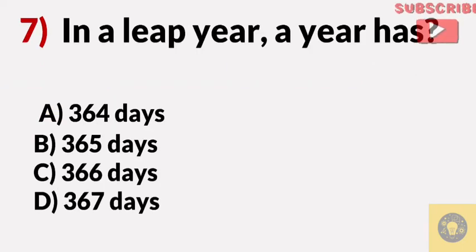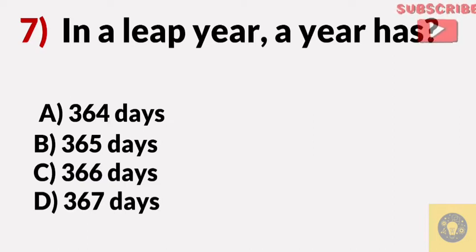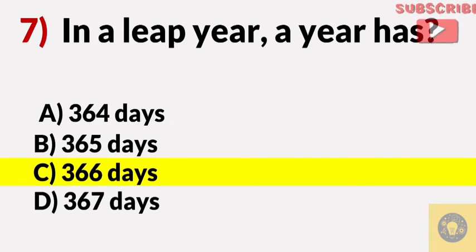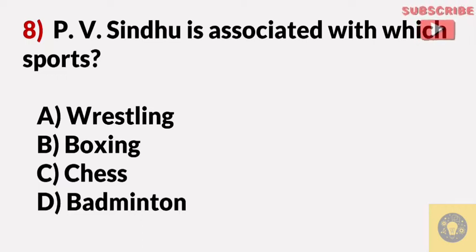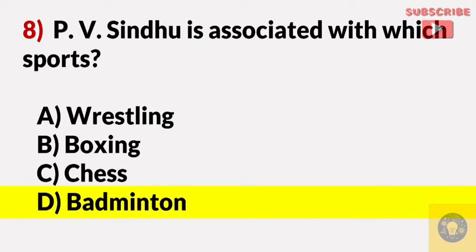In a leap year, a leap year has — Answer C, three hundred sixty-six days. P.B. Sidhu is associated with which sport? Answer D, badminton.